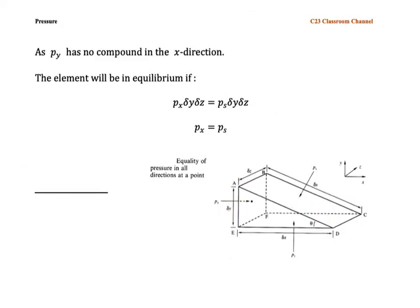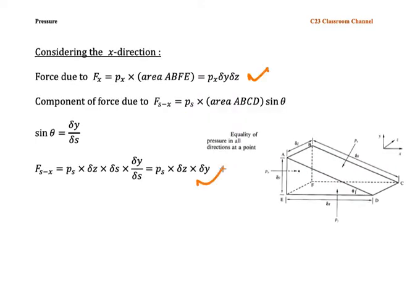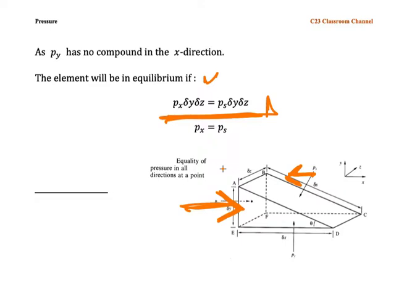We know that we have force in the x direction from left to right and a component force from right to left. In equilibrium, the left side force must equal the right side force. Equalizing these two forces and canceling the common area dy dz, we can say that Px is equal to Ps. This means that at one single point, the pressure acting in the x direction is the same as the pressure acting in the inclined direction.